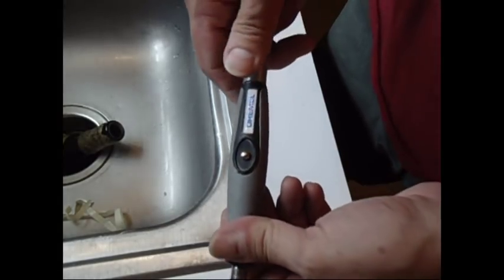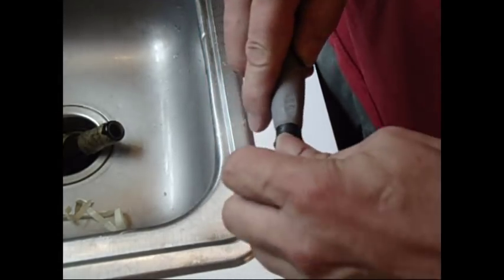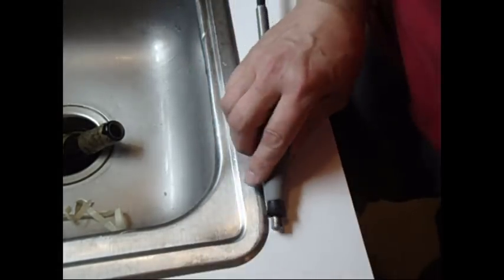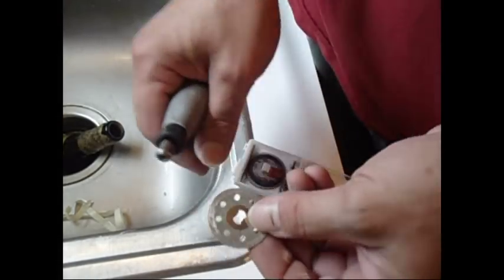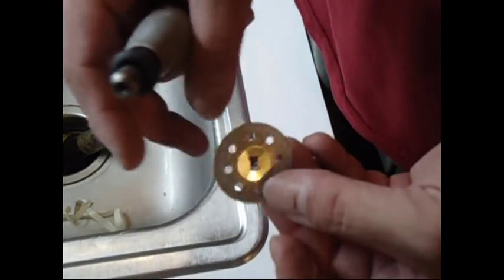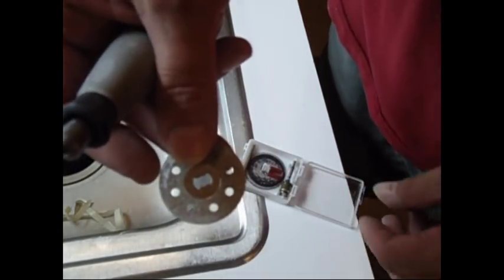What I use is a Dremel connected to a flex shaft. This is a different bit that I have in it. What you need to get yourself is a special diamond cutting disc. It costs about 20 bucks.